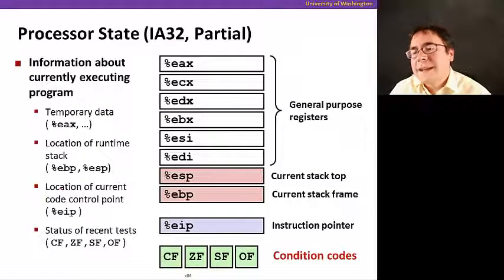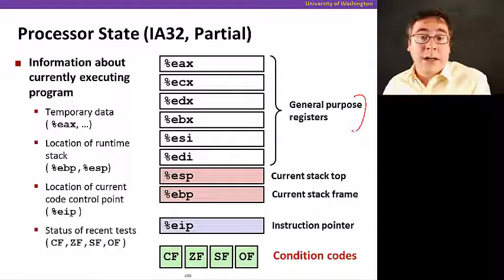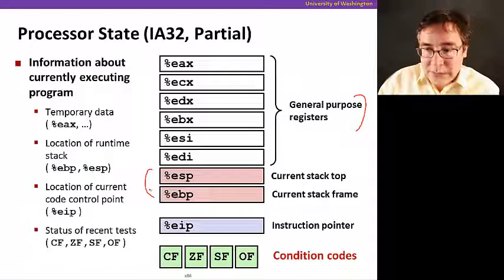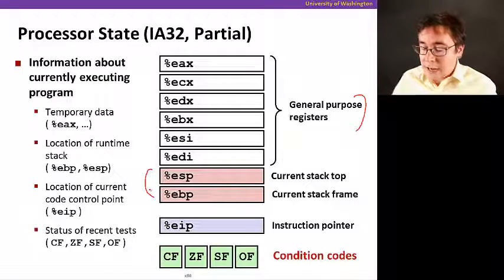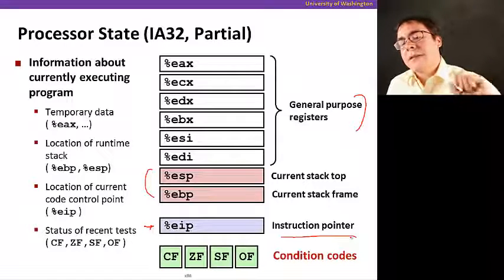Let's look at the processor state again. Remember that we have the registers that we've been playing with already in our assembly programs. These two registers are special, they're the stack pointer and the base pointer. The instruction pointer tells what instruction is going to be executed next.